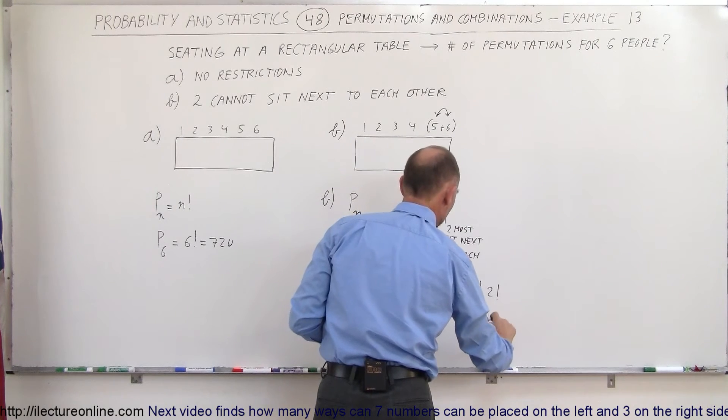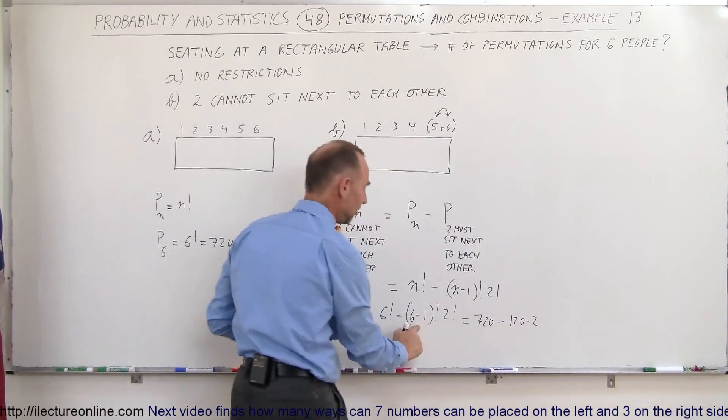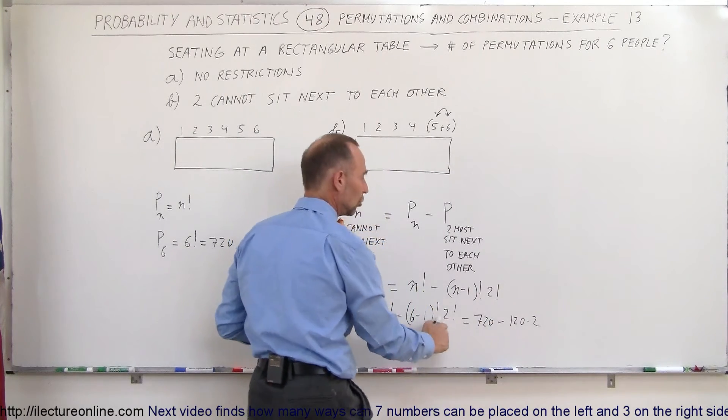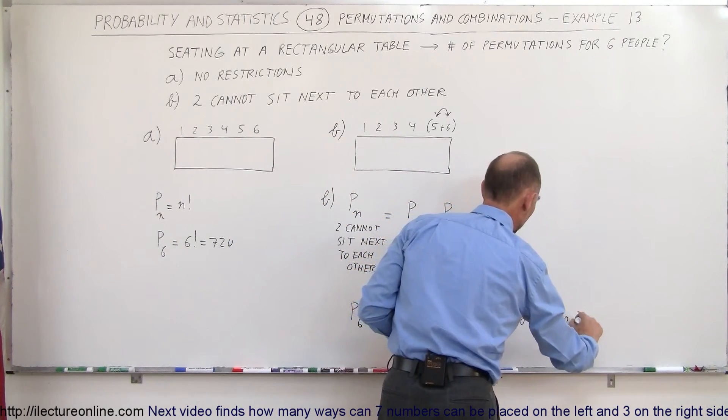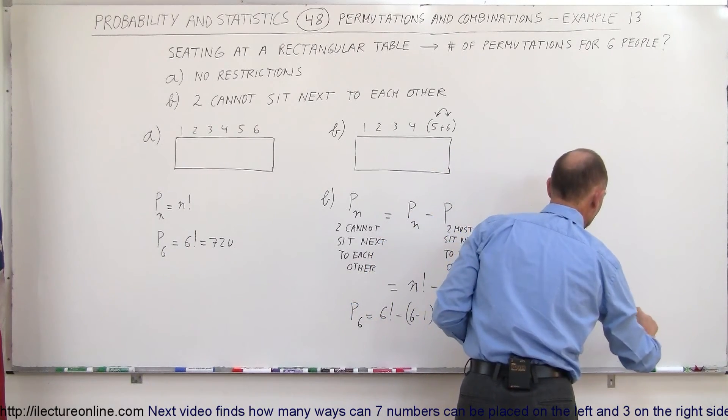So in this case that would be 720 minus 120 times two, because five factorial is 120 times two. So it would be equal to 720 minus 240, and that would be equal to 480 different ways.